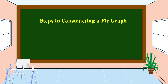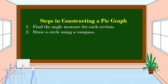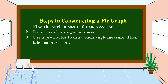These are the steps in constructing a pie graph. Number one: find the angle measure for each section. Number two: draw a circle using a compass. Number three: use a protractor to draw each angle measure, then label each section. Number four: write a title for the graph.